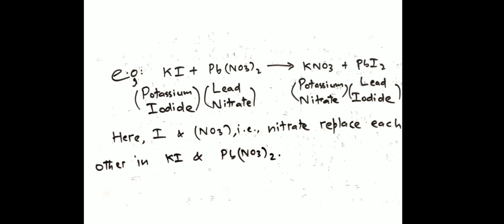This is like sulfate, SO4. In reactions, either elements or groups are displaced. Here a group is displaced: the nitrate group and iodine are displaced from their places. So potassium iodide and lead nitrate react to form lead iodide and potassium nitrate.